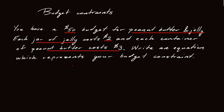Well the budget constraint just represents your total spending. I'm going to spend $50 on peanut butter and jelly. So I have $50. That's the total.